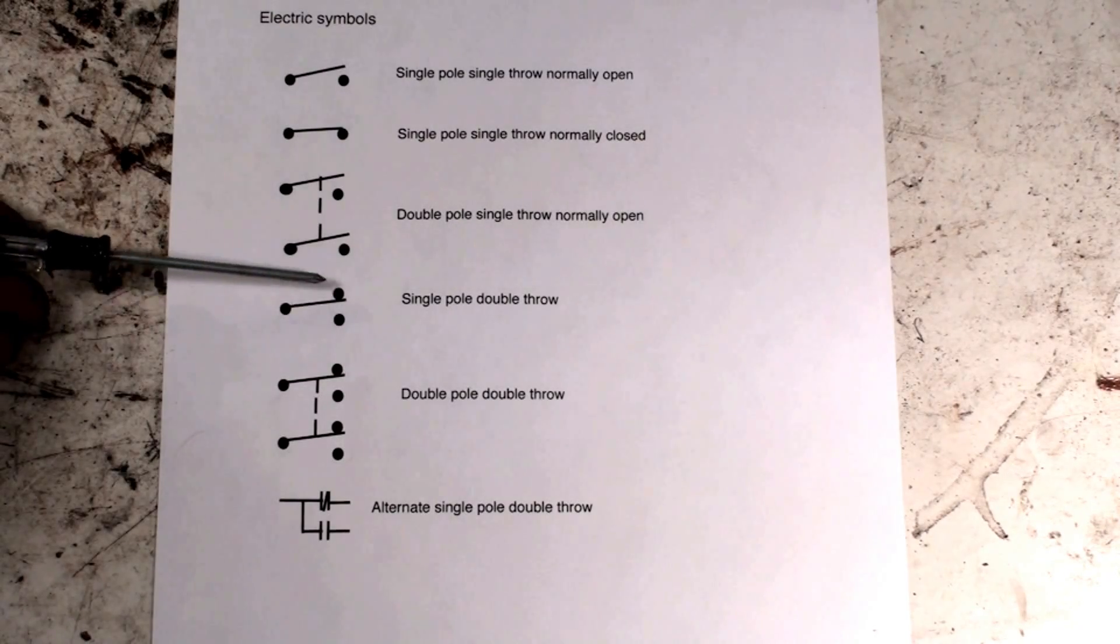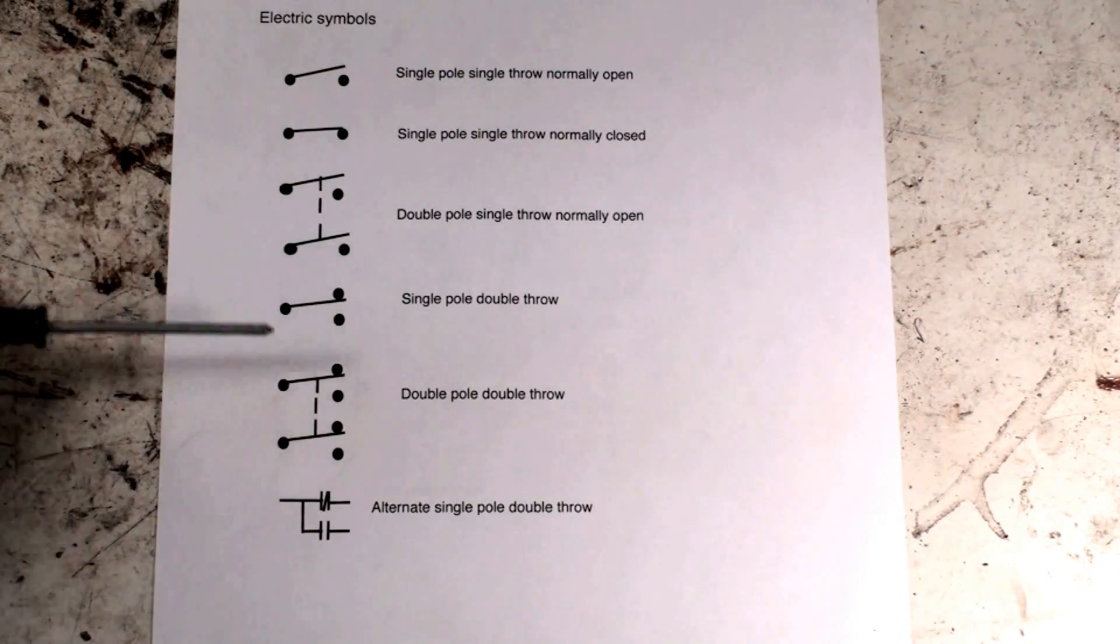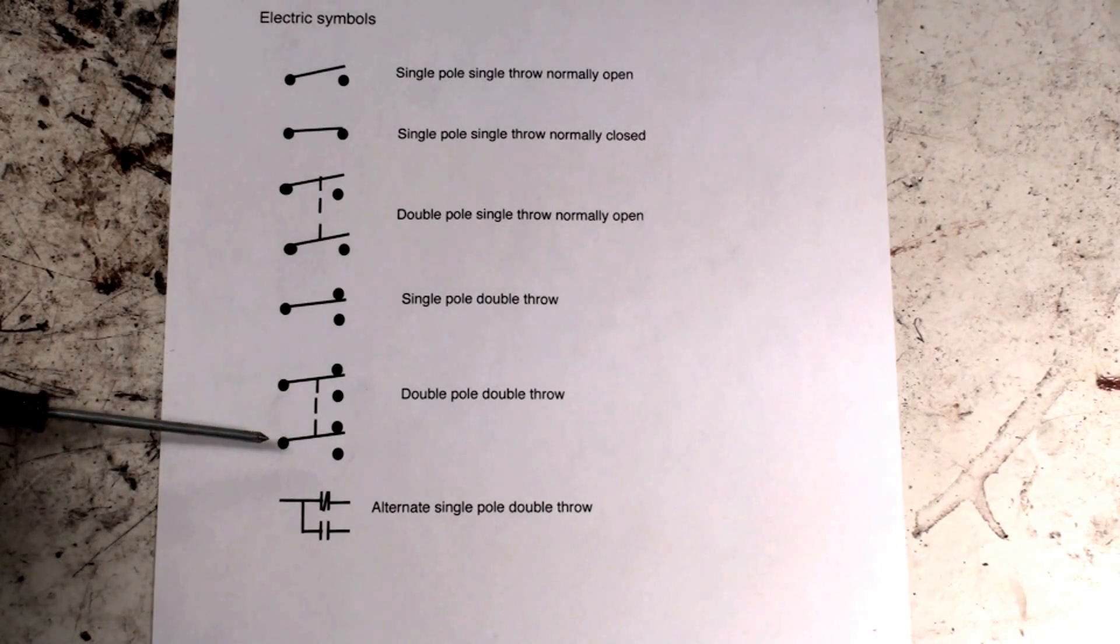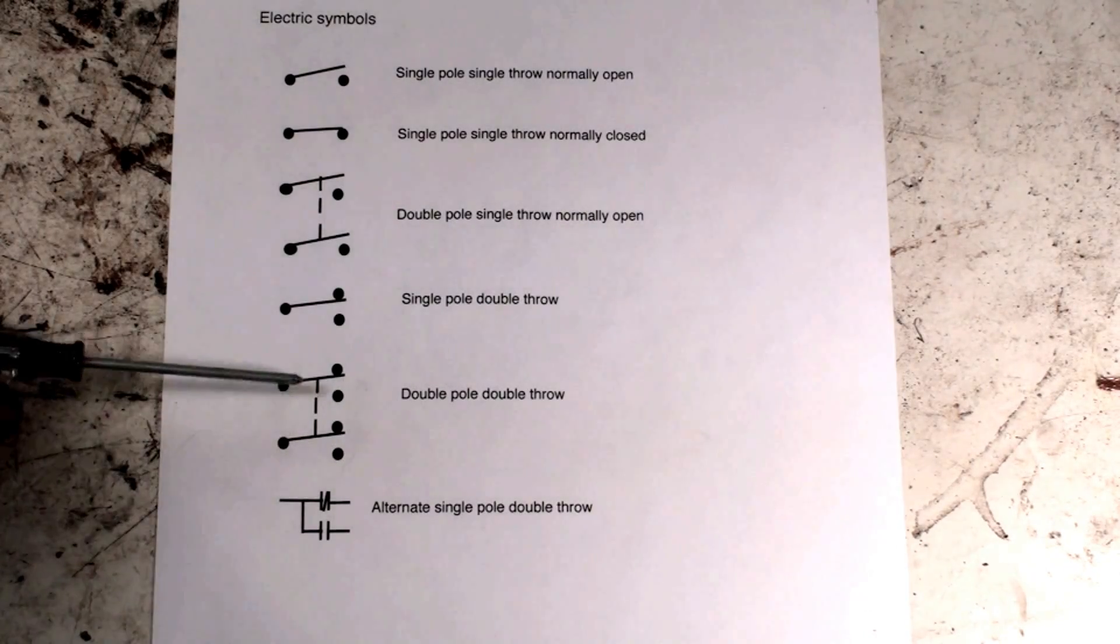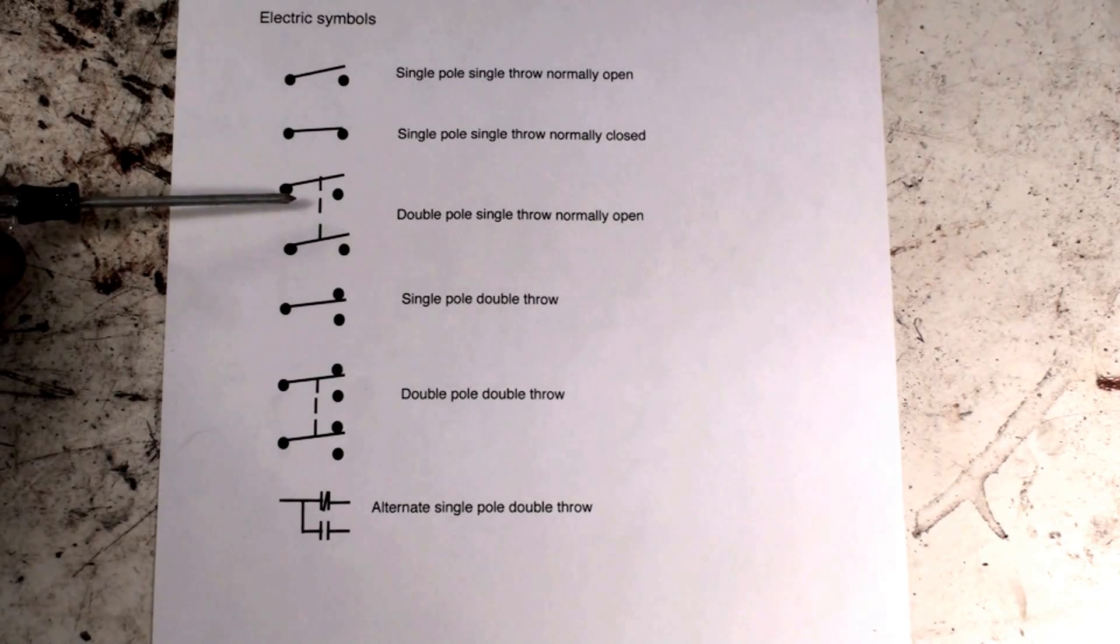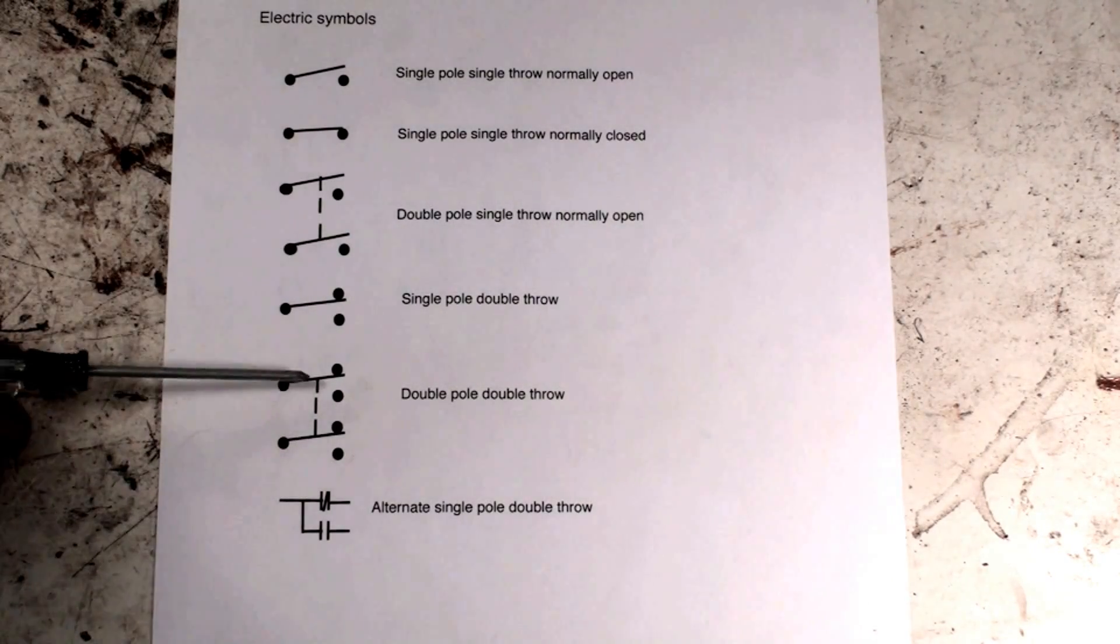Now here's a double pole double throw, and it's really just this switch up here but with double poles. So when this one moves, then this one moves and changes position.